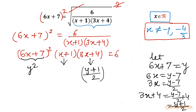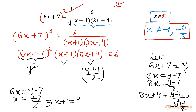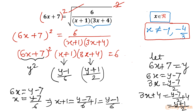Now for x plus 1: since 6x equals y minus 7, x equals (y minus 7) over 6. Adding 1 to both sides gives x plus 1 equals (y minus 7)/6 plus 1, which simplifies to (y minus 1) over 6. So the left hand side becomes y² times (y minus 1)/6 times (y plus 1)/2, and the right hand side is 6. This gives y²(y minus 1)(y plus 1) divided by 12 equals 6.